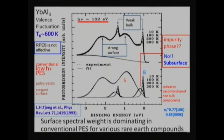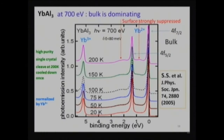If one does ytterbium-system photoemission at low photon energies like 100 eV, the ytterbium 4f bulk state is very weak and a large hump comes from the surface. Previous analysis assumed impurity states in addition to bulk and surface states, but such analysis is too arbitrary and not reliable. So we decided to do photoemission at 700 eV, where the strong surface state is much suppressed, and we can recognize very sharp bulk electronic structures. This result from around 2005 is much more bulk-sensitive than conventional photoemission around 100 eV.